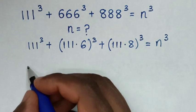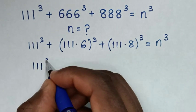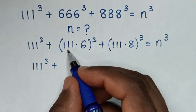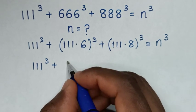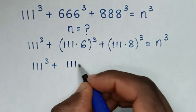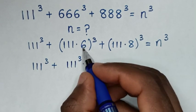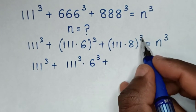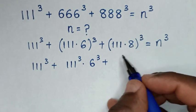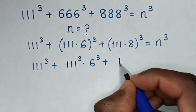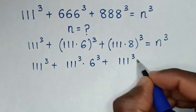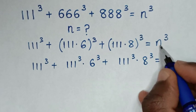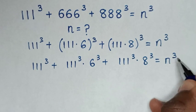Then in the next step, we take the power of 3 inside each bracket. So it will be 111 power of 3 times 6 power of 3, plus 111 power of 3 times 8 power of 3, is equal to n power of 3.